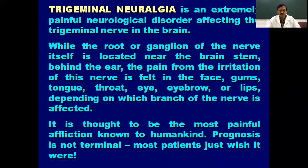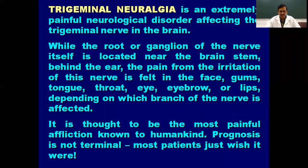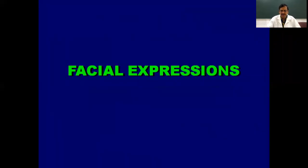Trigeminal neuralgia is an extremely painful neurological disorder affecting the trigeminal nerve. The root or ganglion of the nerve is located near the brainstem, behind the ear, but the pain is felt in the face, gums, tongue, throat, eyes, eyebrows, or lips depending on which branch is affected. It is thought to be one of the most painful conditions known to humankind.